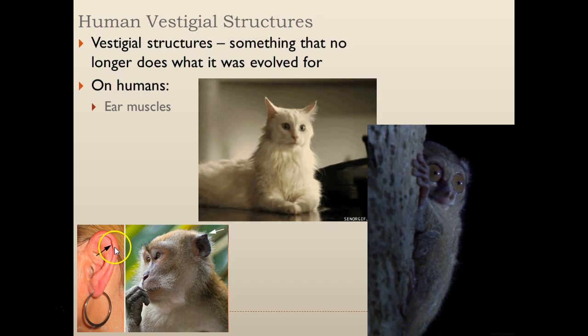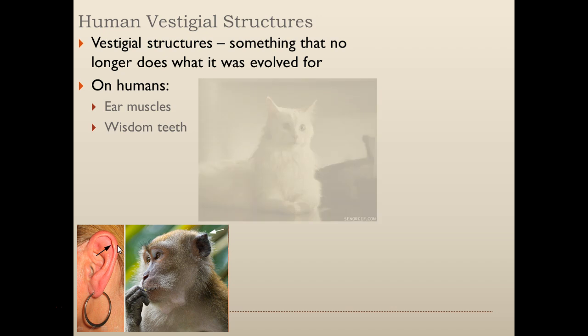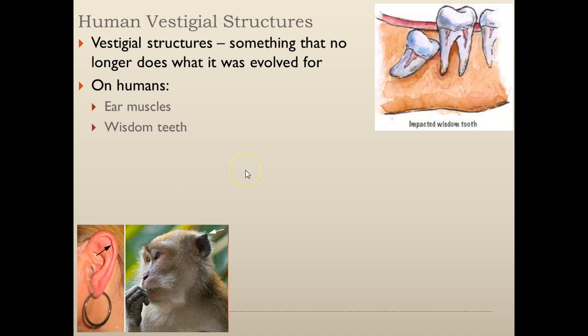Those ear muscles don't do what they originally evolved for. Why are they even there? Our ancestors needed them. How about wisdom teeth? A lot of us — myself included — have had our wisdom teeth removed. Over time our jaws have shrunk as we've essentially learned to cook. When you cook, you don't need to chew as much. However, when your jaws shrink and the number of teeth remains the same, you run into problems. Wisdom teeth are an extra tooth that no longer does what it was evolved for: grinding plants. We don't need it.